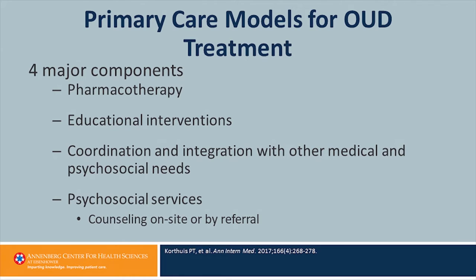I urge you to pull the article and look at the other models. There are variations, but they all have four major components. Pharmacotherapy is a key piece — medication works, as we talked about. Educational interventions involve educating both patients and families, but also staff, about the chronic relapsing nature of the illness and the need for effective medication.